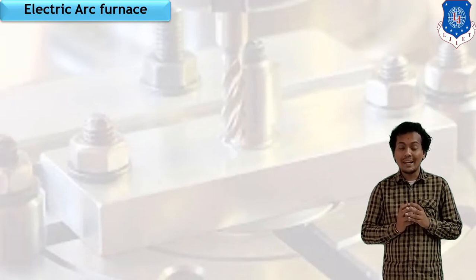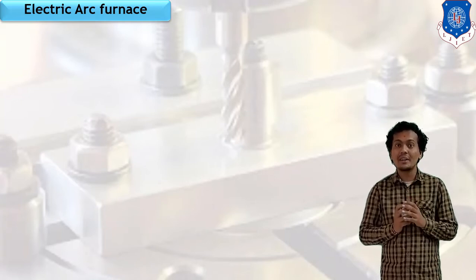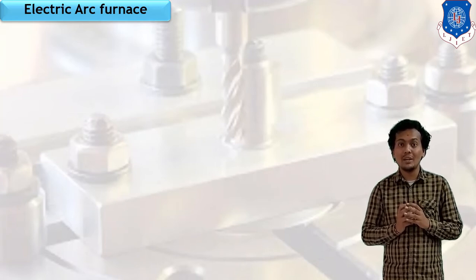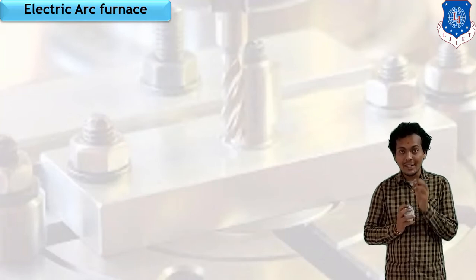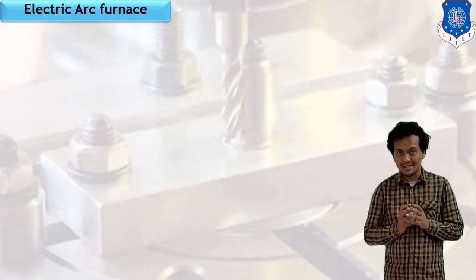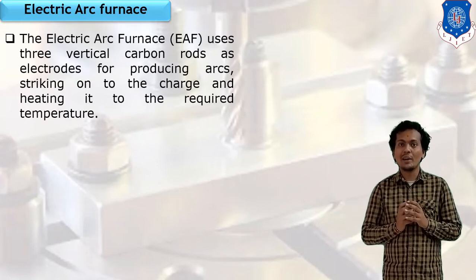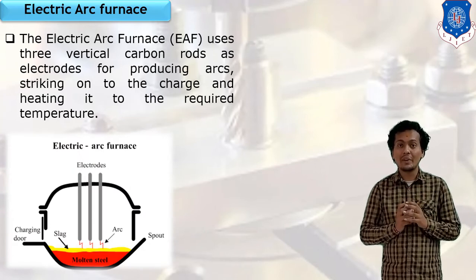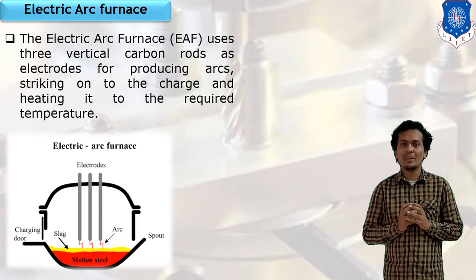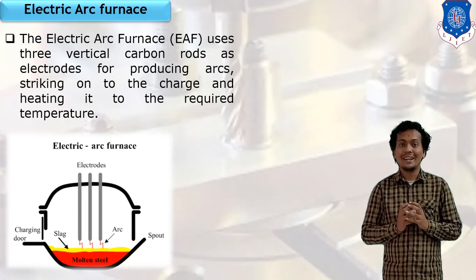In the electric arc furnace, as per the name, an arc is generated, and with the help of this arc, heat is produced to convert metal into liquid form. The arc is a flow of electrons — a sudden bundle of energy released. There is one vessel known as a crucible with two electrodes, positive and negative. With the help of arc generation, the metal is converted into liquid form.